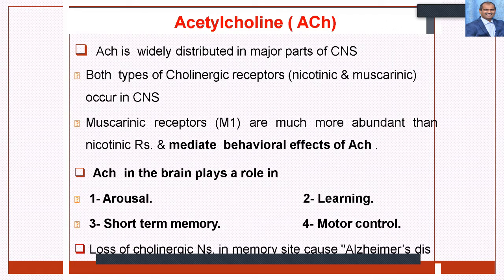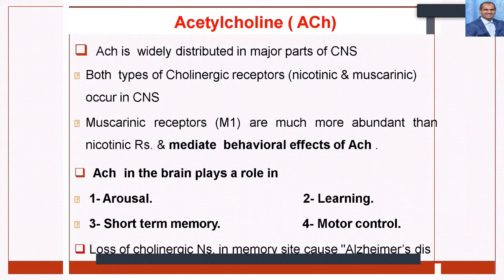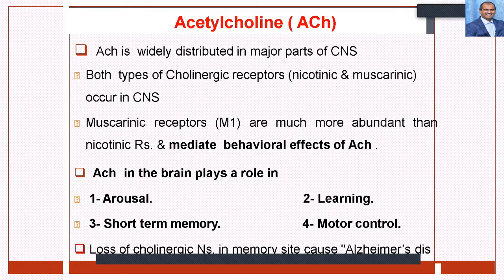Acetylcholine is widely distributed in the CNS. Both nicotinic and muscarinic cholinergic receptors occur in the CNS, with muscarinic receptors being much more abundant than nicotinic receptors. The roles of acetylcholine include arousal, learning, short-term memory, and motor control. Loss of the cholinergic nervous system in memory areas causes Alzheimer's disease — loss of memory, also called amnesia.